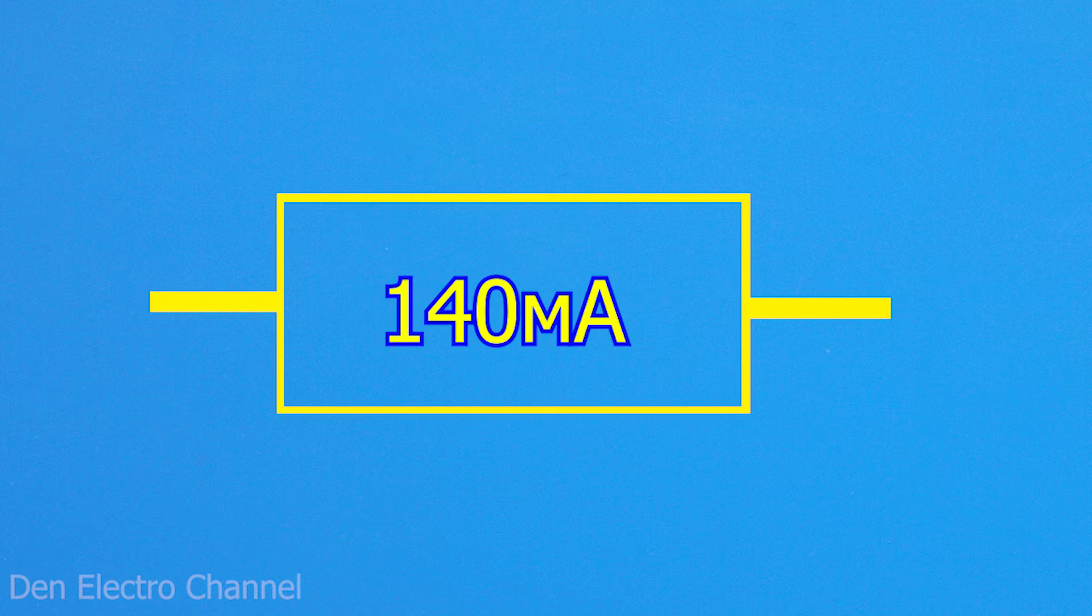We need to know what power the resistor we use in the circuit should be. See for yourself. A current of 140 milliamps flows through the resistor, a voltage of 12 volts drops across it. Let's multiply these numbers.